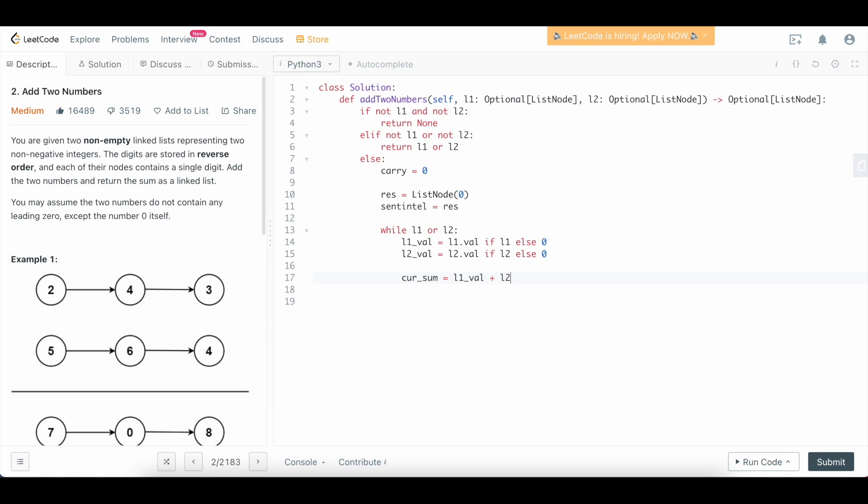Now we need to calculate the sum, so we'll say cur_sum equals l1_val plus l2_val plus whatever the carry was from the previous computation. And then we're going to say res.next is going to be a new ListNode whose value is going to be cur_sum—oops, this should be ListNode—ListNode.